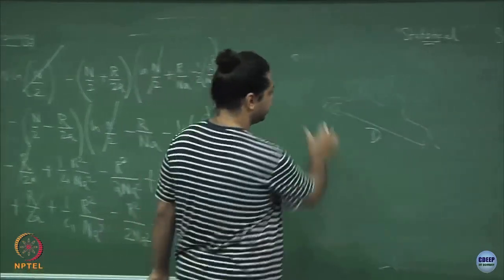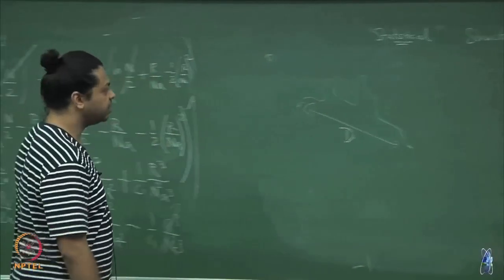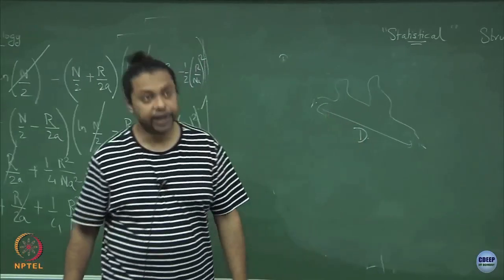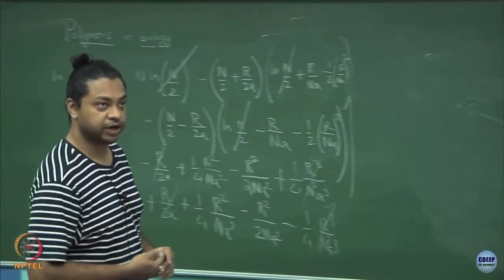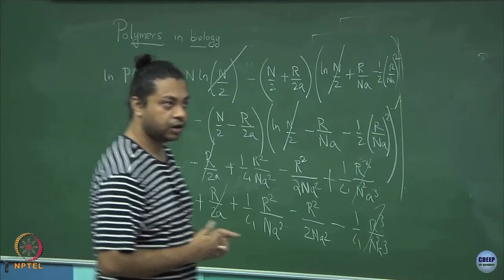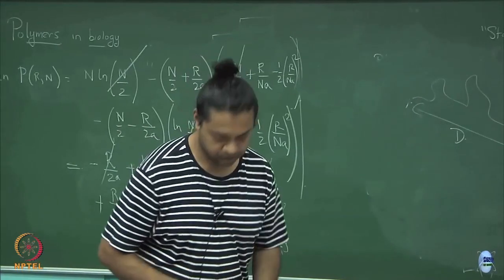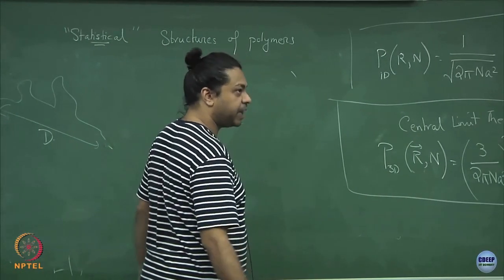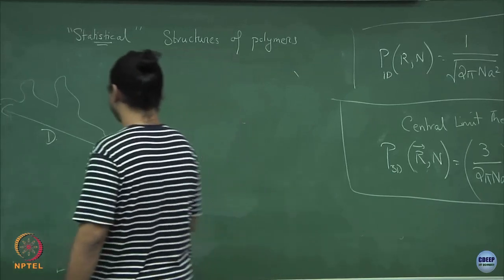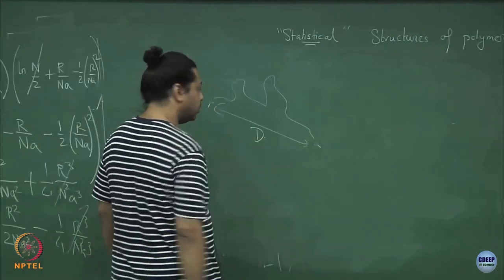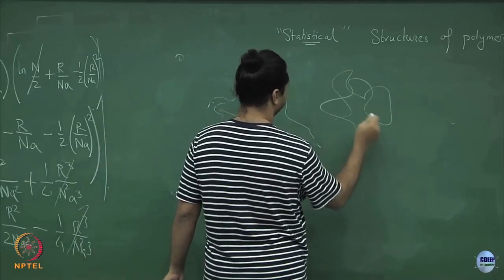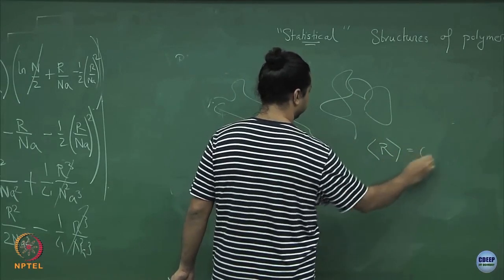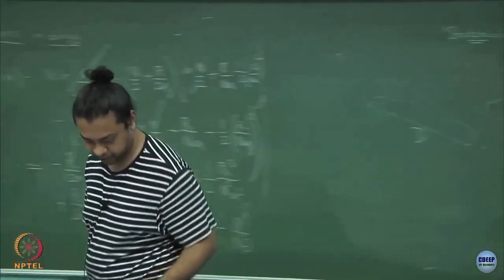I have taken a polymer, stretched its two ends apart by some distance d, then let it go and let it equilibrate. The mean end-to-end distance would still come back to 0. If you stretch it apart by distance d and let it go, after some time, if you take an average over all conformations, you find the mean end-to-end distance comes back to 0.